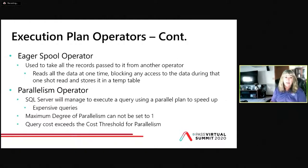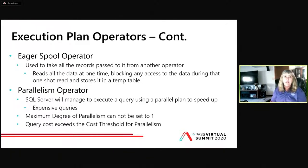An eager spool operator takes all the records passed to it from another operator, reads all the data at one time — blocking any access to the data during that one-shot read — and stores it into a temp table. Finally, a parallelism operator: SQL Server will manage to execute a query using a parallel plan to speed up expensive queries. If the optimizer sees an expensive query and you have max degree of parallelism set to zero (unlimited), it'll parallelize the plan. It also looks at the query costs — if costs exceed the cost threshold for parallelism setting, it will parallelize it.